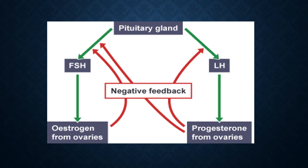Luteinizing hormone in turn controls the production of progesterone. The high level of progesterone sends a negative feedback to the pituitary gland to inhibit the further production of the luteinizing hormone.